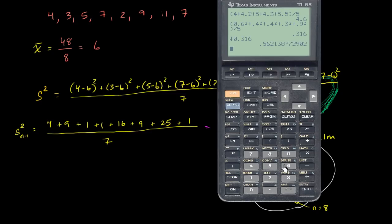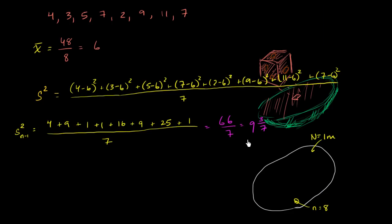66 divided by 7 gives us 9 point, I'll just round it. So it's approximately 9.43. So this is approximately 9.43. Now, that gave us our unbiased sample variance.